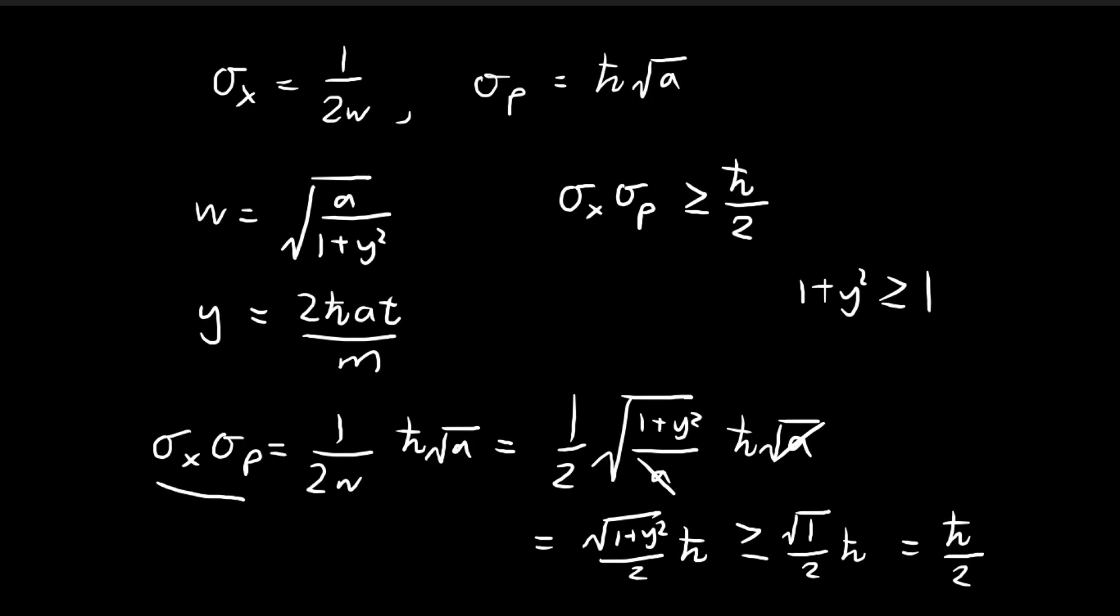So the product of the standard deviations is always larger than or equal to ℏ divided by 2. The uncertainty principle is indeed true.